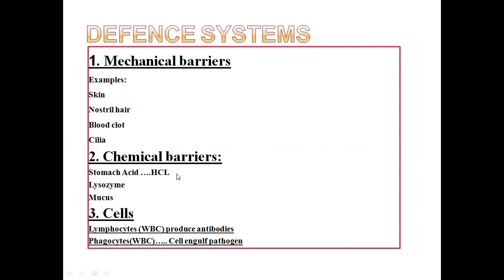The chemical barrier includes stomach acid — the stomach produces HCl, which provides an acidic environment that can damage and stop pathogen growth. Lysozyme is a special enzyme present in saliva, tears, and sweat that breaks the bacterial cell wall, stopping bacterial growth. Mucus is produced by special goblet cells and traps pathogens to protect your body.